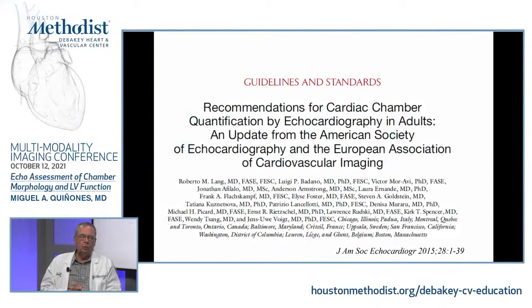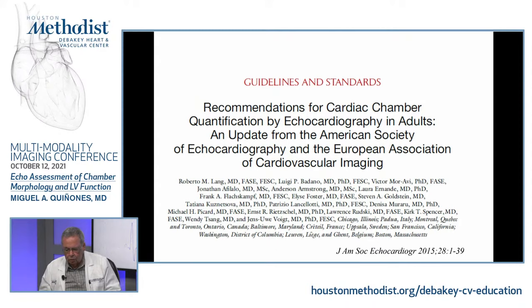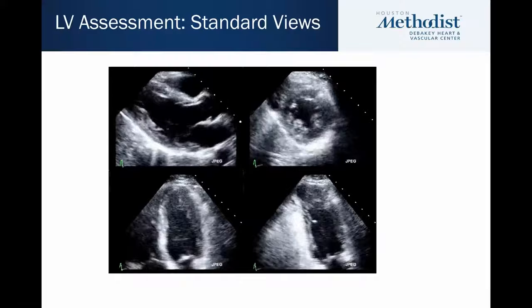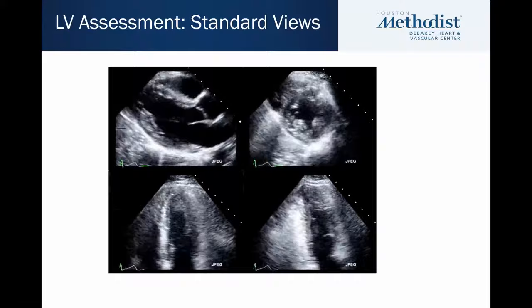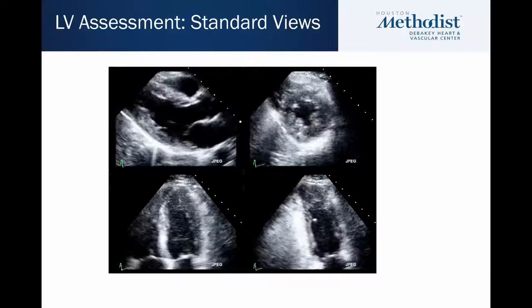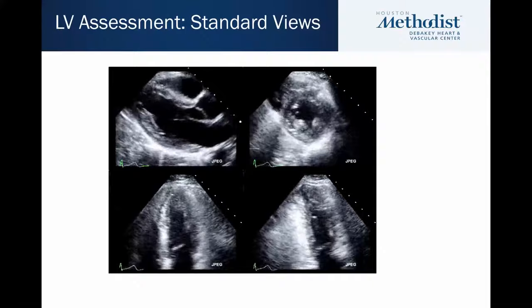A lot of what we're going to cover today is discussed in the guidelines published in 2015, recommendations for cardiac chamber quantification, first authored by Dr. Roberto Lang, with a large group of experts participating in this important document. Most of our focus today is on the left ventricle, which is reasonable given that a good amount of indications for echocardiography are for the purpose of assessing left ventricular function. Shown here are the four common views used to look at the left ventricle: parasternal long axis and short axis, and the apical four and two-chamber views.